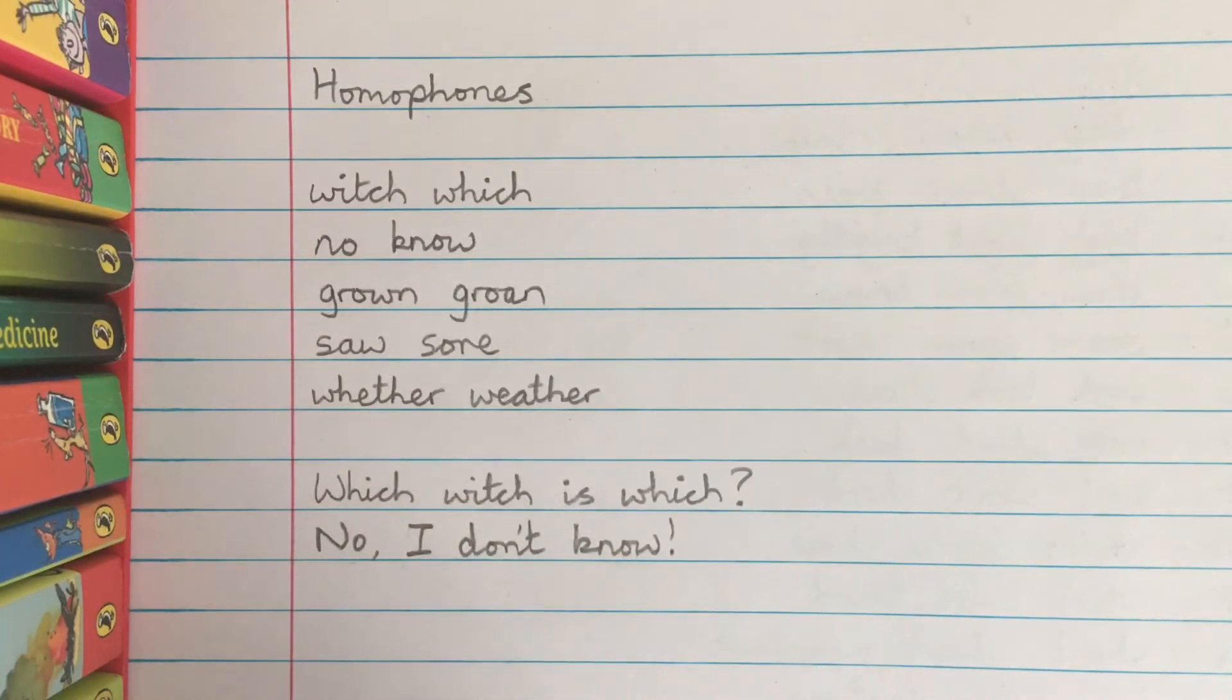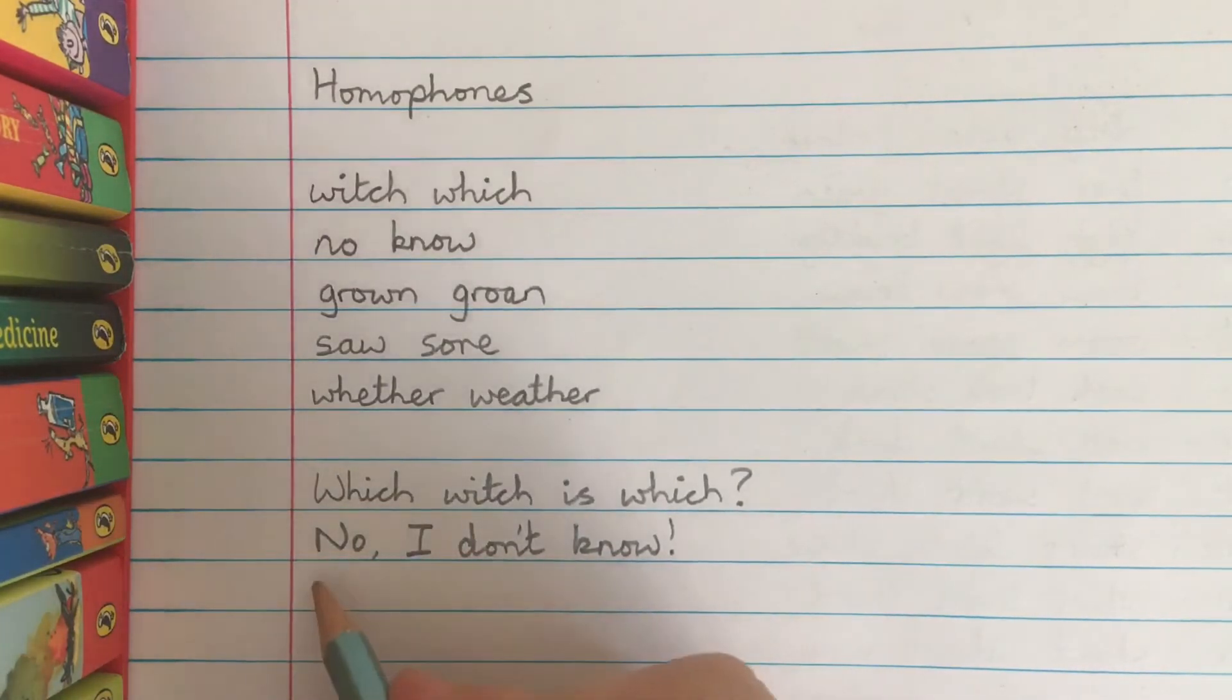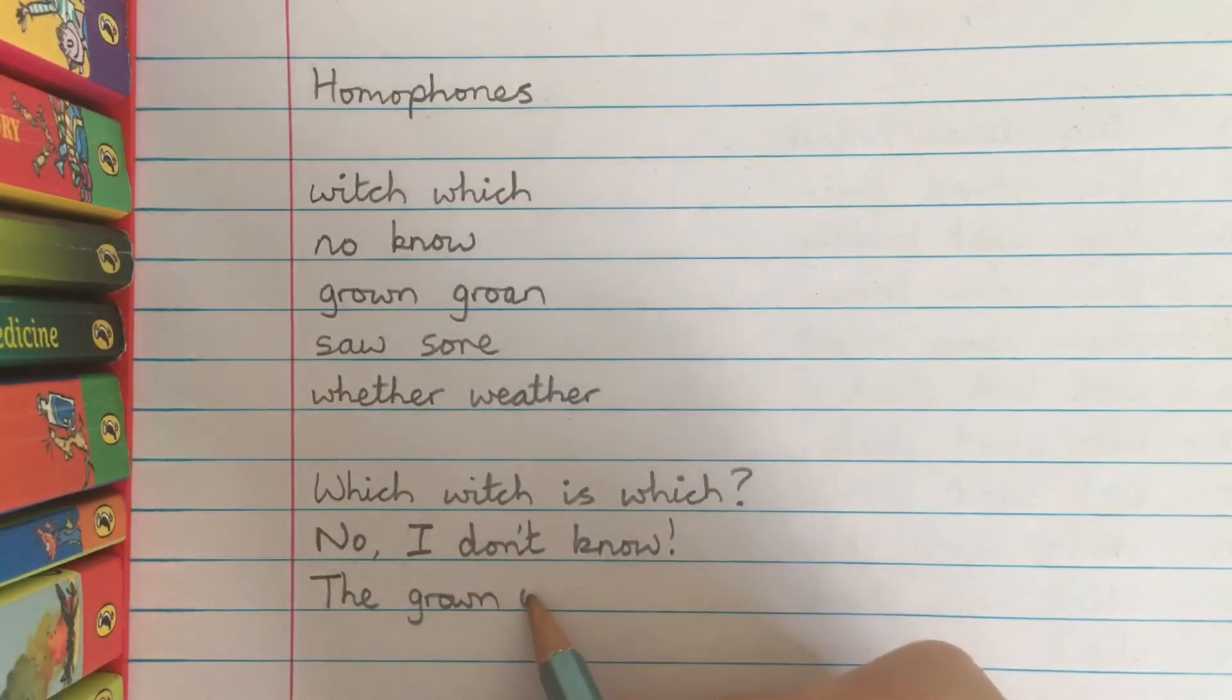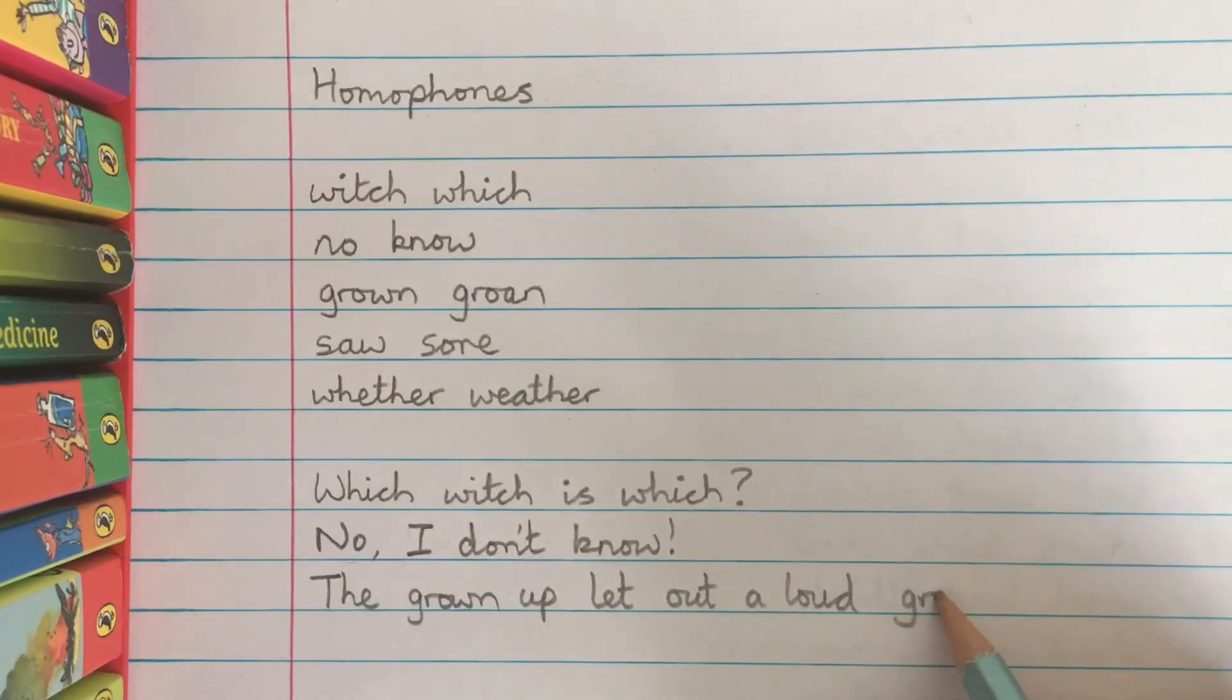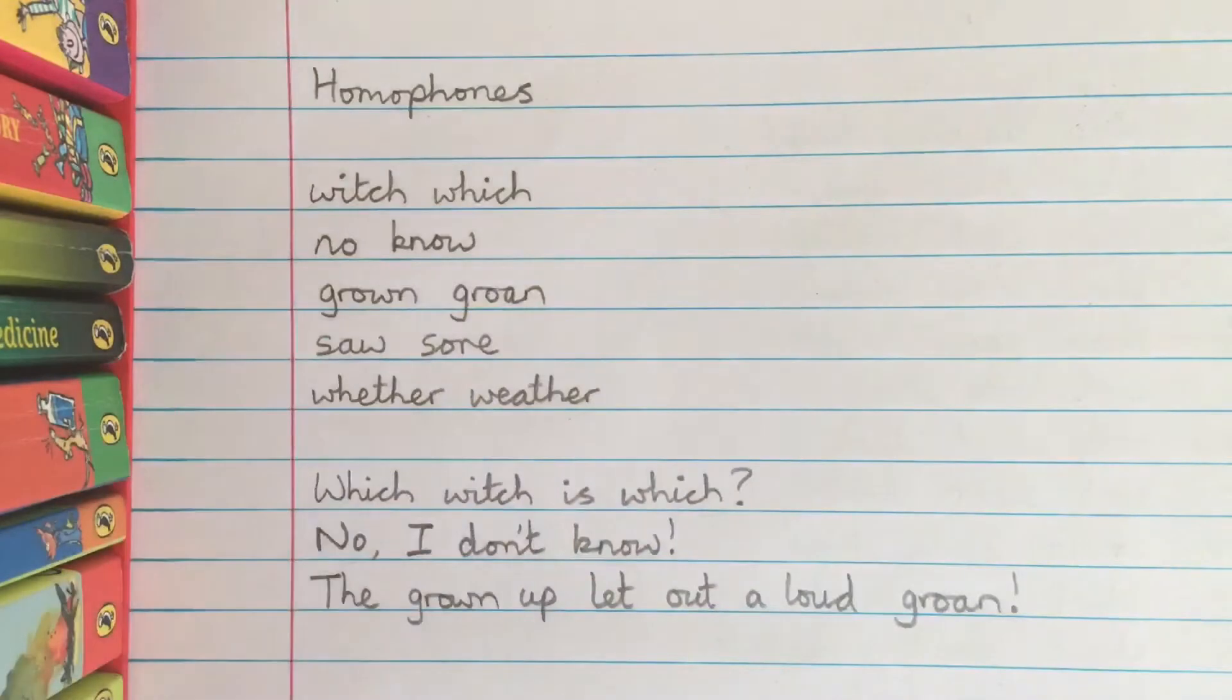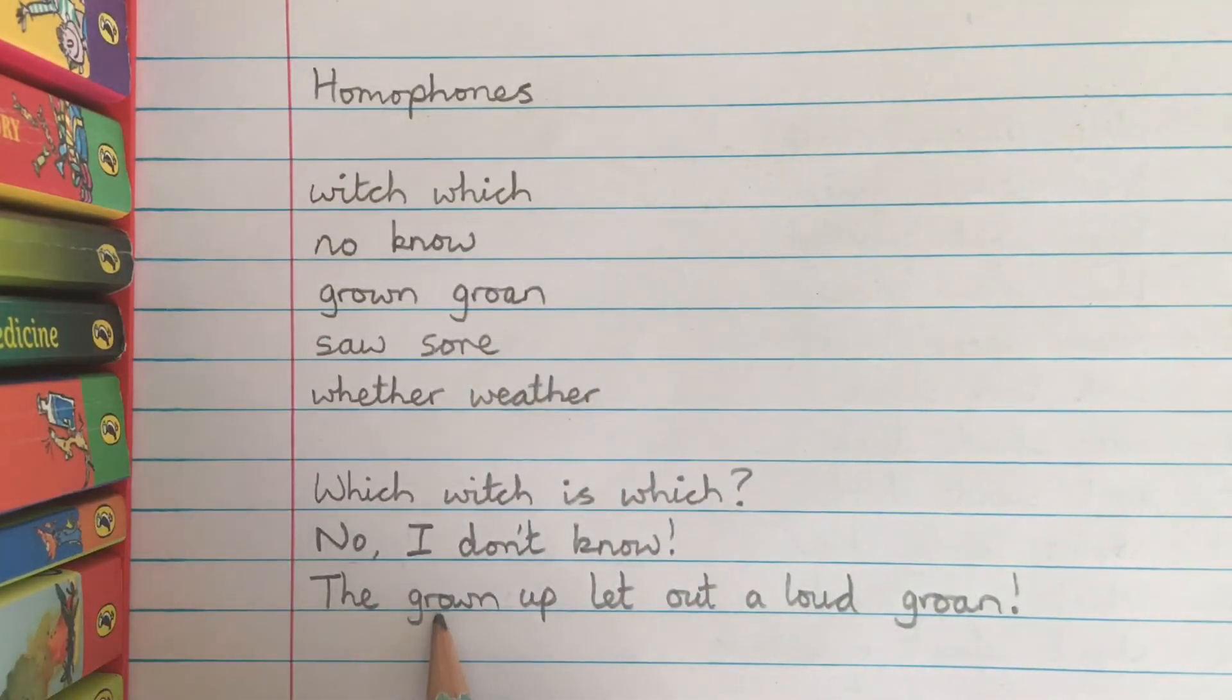Let's have a go at the next one with groan and grown. The grown-up let out a loud groan. So this one is to do with growing, growing up, whereas this one is to do with groaning as in making that noise.